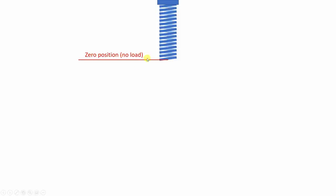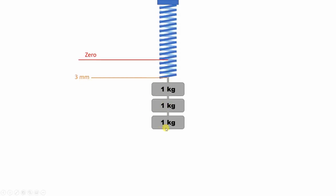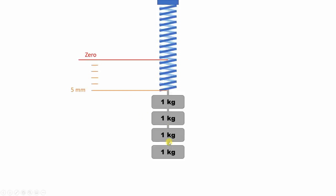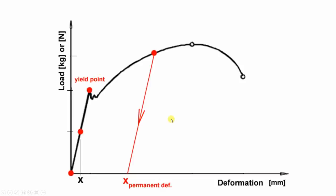Let's say we have this spring in its zero position without any load. If we place one kilogram load, it will deform one millimeter. Two kilograms, two millimeters. Three kilograms, three millimeters. So far it is in that linear elasticity. But if the load is above the yield point—for example, we place four kilograms and it deforms five millimeters instead of four—then even if I remove the load, it may have some permanent deformation.